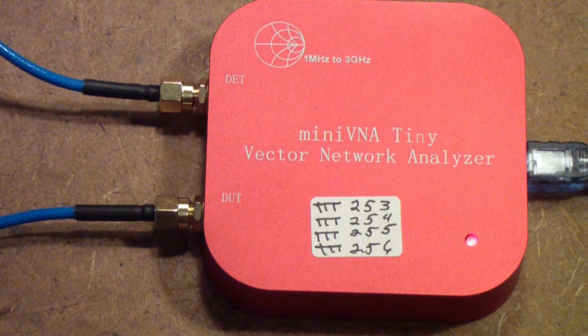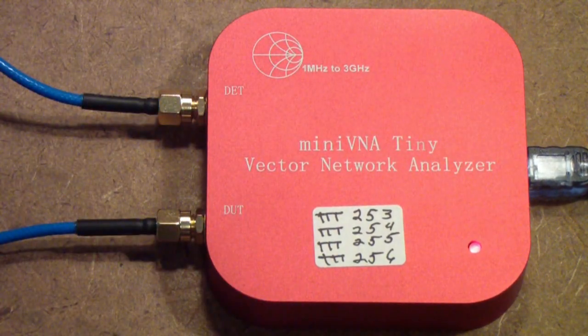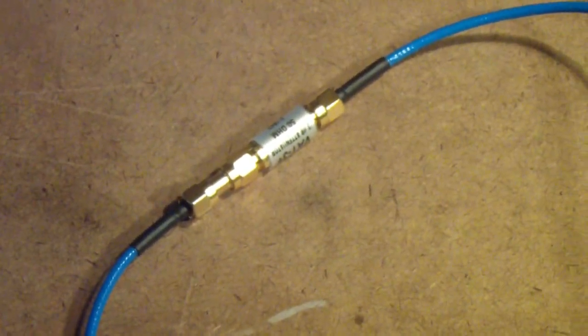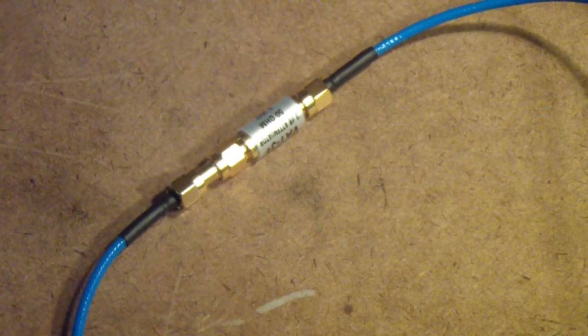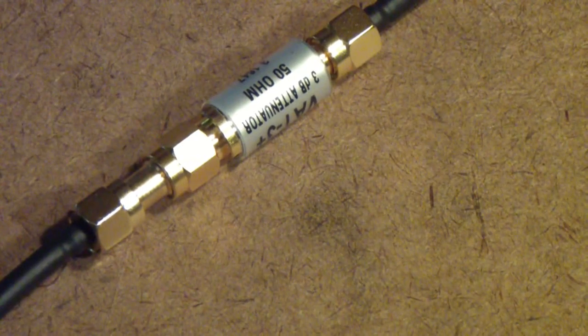So if you're not familiar with the Mini VNA Tiny and would like a little more information on it, you might look at one or more of those videos. The particular device that I am testing is this Mini Circuits 3 dB attenuator.